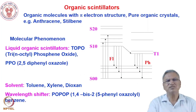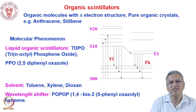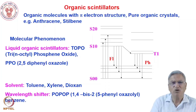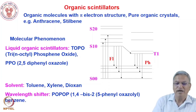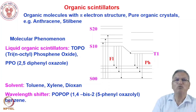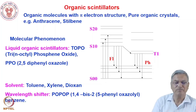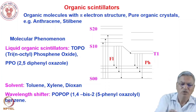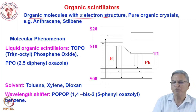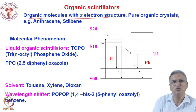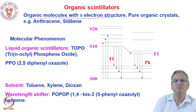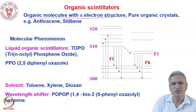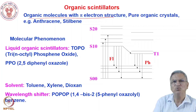Scintillators can be of two types: organic or inorganic. Organic scintillators have their own advantages and disadvantages. The advantage is their molecular structure — each molecule is fluorescing, unlike inorganic scintillators where the entire crystal lattice generates the light. Organic molecules with pi-electron structure, like pure organic crystals — anthracene, stilbene — each molecule, when ionized, can get excited and undergo fluorescence.